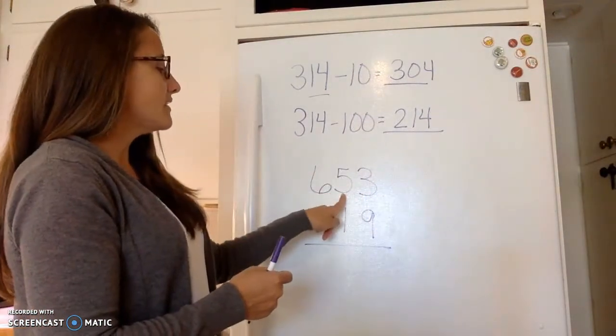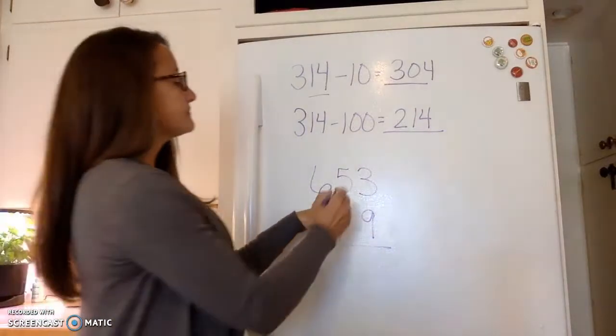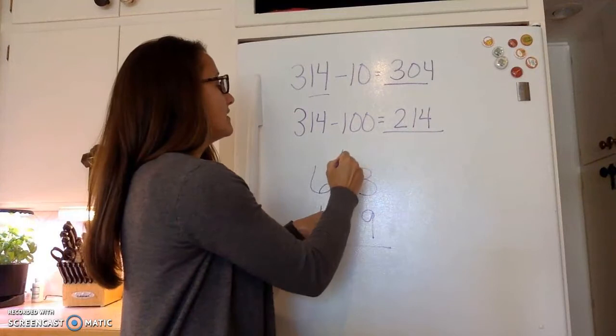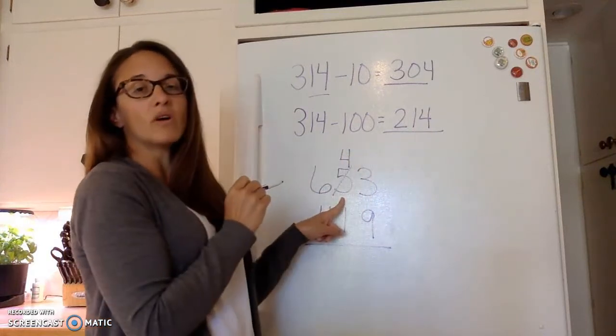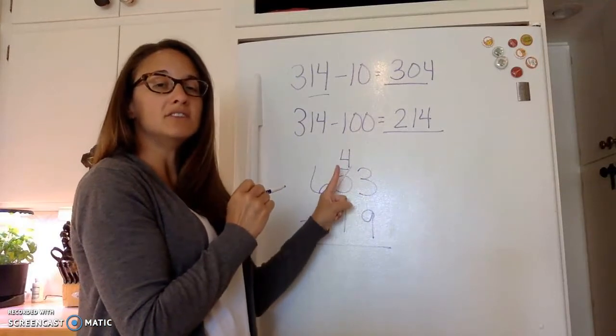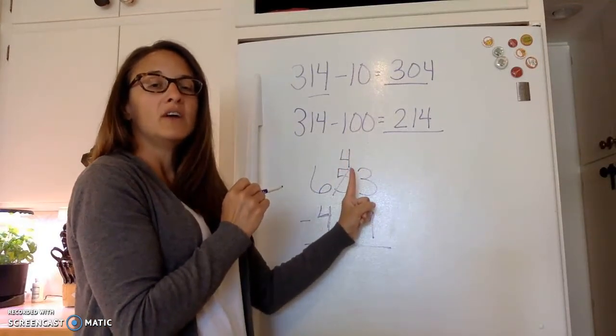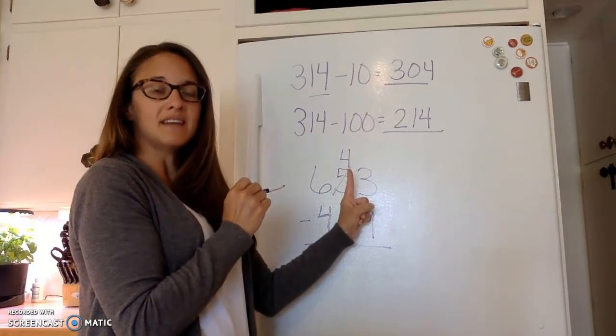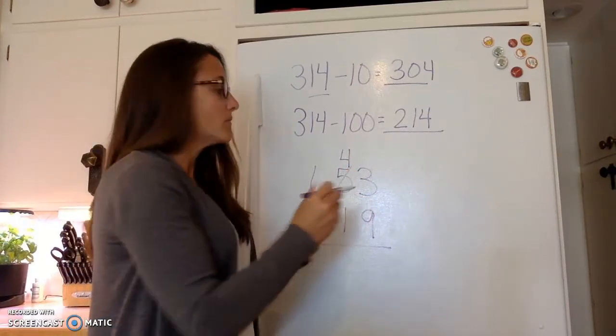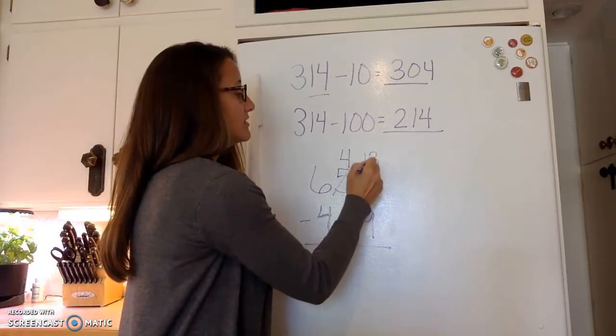So we're going to need to borrow and have more. So we're going to go over here to the ten spot and instead of five tens there's now going to be four and then we're going to take it and move it over here. So you took away one and you're putting it over here. When you add a one to that number you're adding a whole tens. So three plus ten more would make it thirteen.